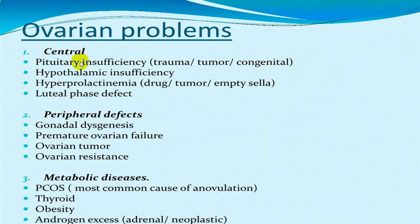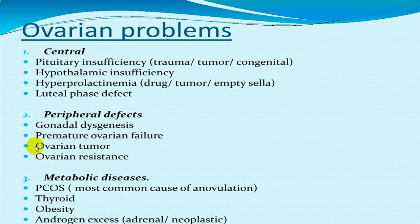Central causes involving the pituitary include trauma, tumor, vascular events, and congenital defects. Hypothalamic causes are similarly traumatic, tumor-related, or vascular. There can also be increased prolactin production secondary to drugs, prolactinomas, empty sella syndrome, or luteal phase defects. Peripheral defects are mainly ovarian — ovarian tumors, or damage to the ovary due to infection, trauma, vascular causes, radiation, or surgery.